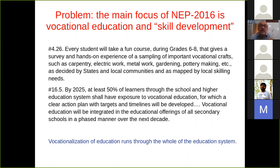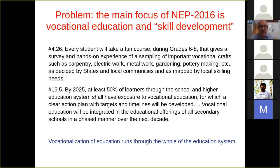Another problem is that the whole focus of NEP 2020 is essentially geared towards promoting vocational education and skill development. Even though the preamble contains the things I said I liked — developing thinking processes, learning how to learn — effectively the whole education process right from class 6 goes into vocational education and skill development. That means there will be carpentry training in school, cooking training in school, stitching of clothes in school. They say that by 2025, at least 50% of learners through the school and higher education system will have exposure to vocational education.